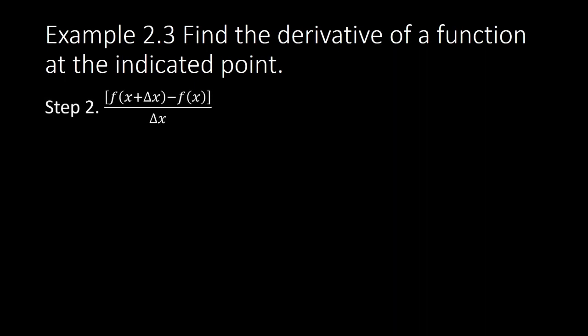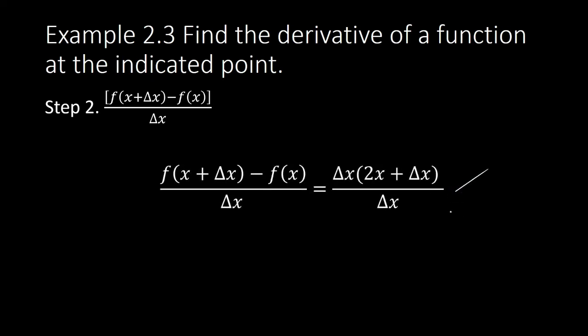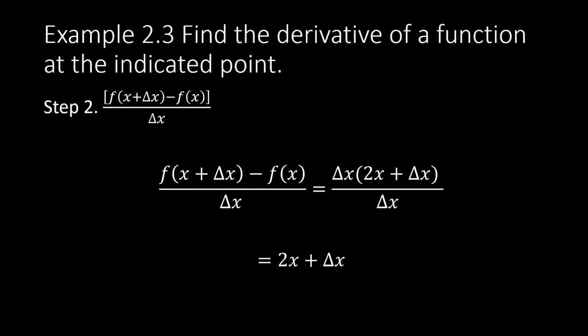Step 2: evaluate f of x plus delta x minus f of x, all divided by delta x — that is the change in y over change in x. By substitution, it equals delta x times (2x plus delta x) divided by delta x. Delta x divided by delta x is just one, so we are left with 2x plus delta x. That completes step two.